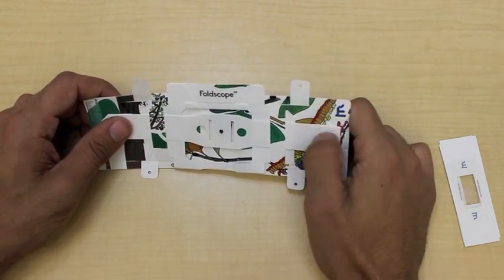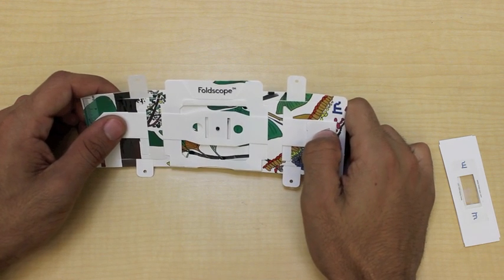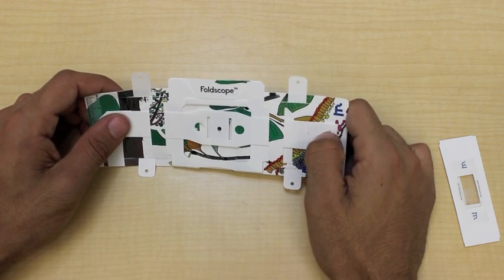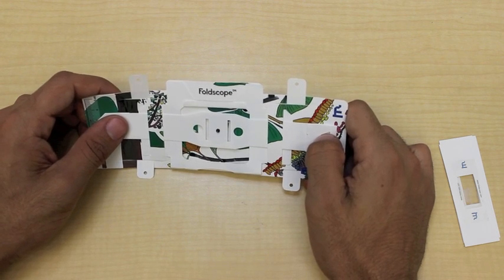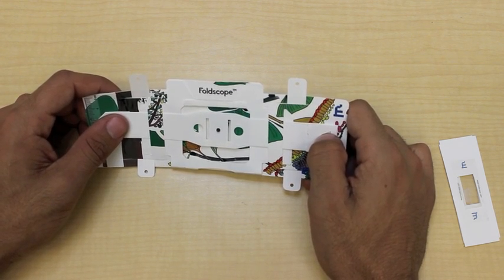Thank you for watching this tutorial on making your own slides. Make sure to watch our next video, which shows you how to use the magnetic couplers to take images with your phone and use your foldscope for projection.